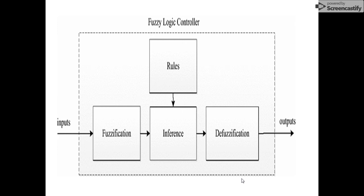After fuzzification, or after conversion of crisp inputs into fuzzy inputs, they will be sent to the inference system. That inference system will fetch some rules according to the inputs. For example, suppose we are going to make a controller for a washing machine based on the total amount of dirt on a specific cloth. It will find rules like: if dirt is heavy, then do this; if dirt is less, then do this; if there is no dirt, then do this. According to the amount of dirt, the machine can perform some specific action. That will be the task of the inference engine.